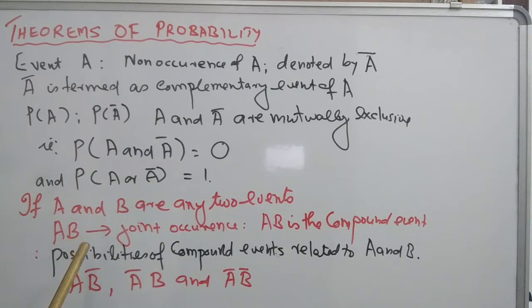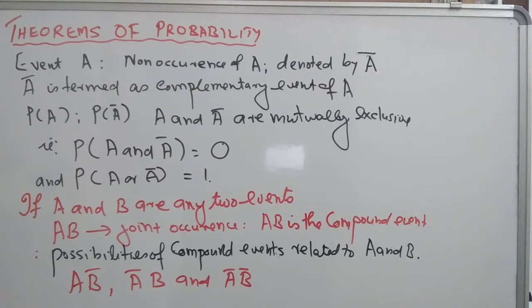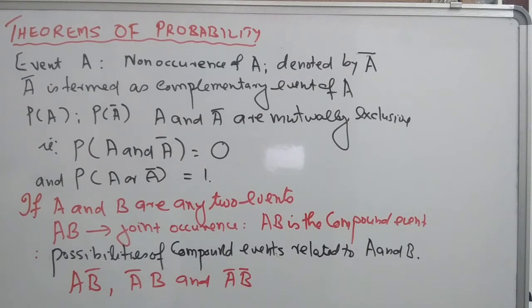Now we consider the case of two events A and B. The simultaneous or joint occurrence is denoted by AB, termed as a compound event. If A and B are any two events, we have four possibilities: the joint occurrence AB, occurrence of A and non-occurrence of B (AB-bar), non-occurrence of A and occurrence of B (A-bar B), and non-occurrence of both A and B (A-bar B-bar).